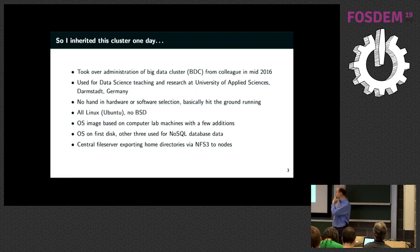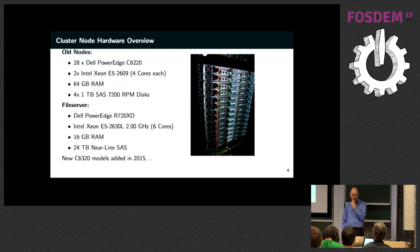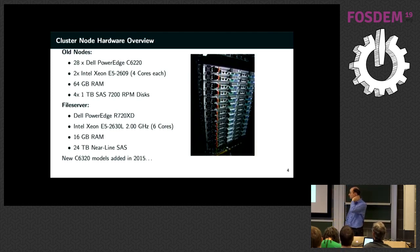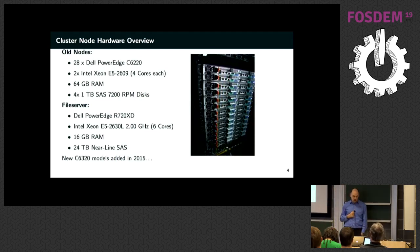They also bought a central file server for exporting home directories for students and professors via NFS3. For the hardware geeks: we have old nodes — the Dell C6220s aren't even on sale anymore since they went out of support a couple of years ago. We're now using the next-generation C6320 models. These are basically 64 GB RAM machines with eight CPUs and four hard disks. The newer nodes have a bit more memory and newer processors. The file server has a bit less memory, which is a concern when thinking about using ZFS later.